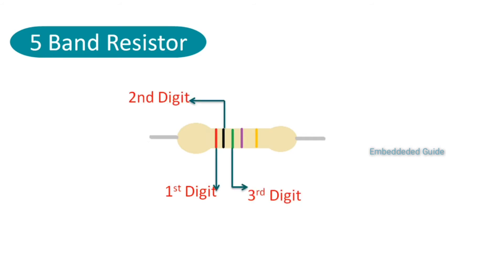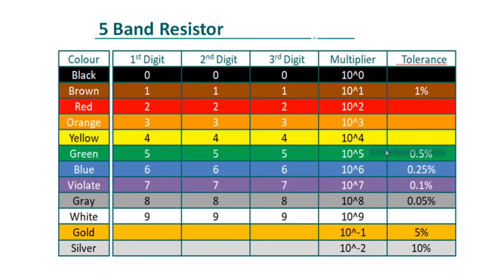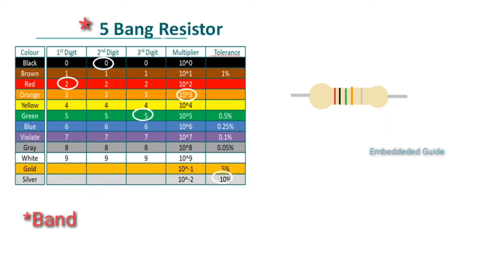Now for the 5-band resistor: the 4th color band represents the resistor as a multiplying factor, and the 5th color band represents the resistor as a tolerance value. Let's check the values in the table. In this table, the first three columns represent digit values based on the color. The 4th column represents the multiplying factor and the 5th column represents the tolerance value based on the color.